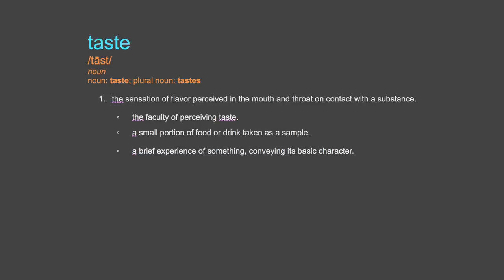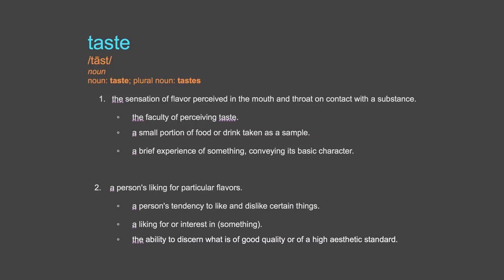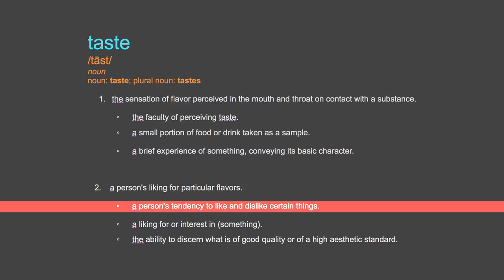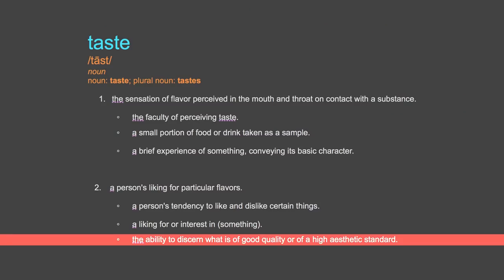But first I'm going to read the definition of taste to you so that I can establish a little bit more of a baseline. The first entry for taste has to do with the actual process of tasting something, which is one of your five senses. That is not what we're discussing today. We're talking about the second entry, which is a person's liking for particular — it says flavors — but it appends that by saying it's a person's tendency to like or dislike certain things. The definition appends this even further and says that it's the ability to discern what is of good quality or of a high aesthetic standard. This has mainly to do with matters of personal preference, interest, and judgment.